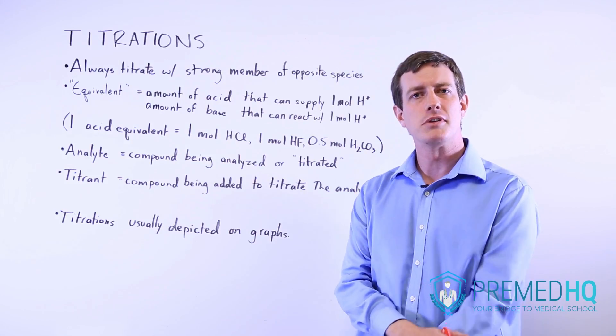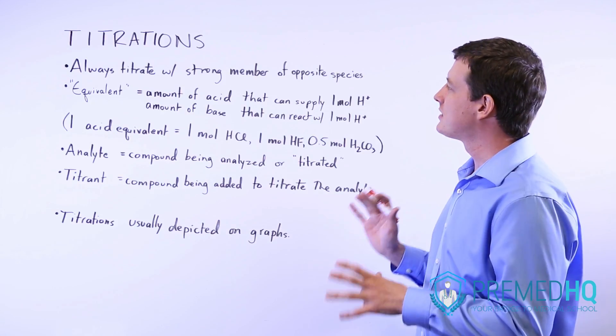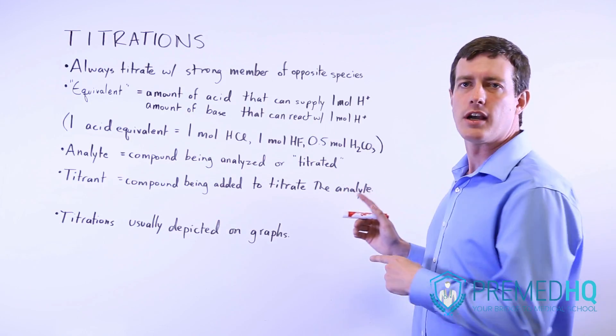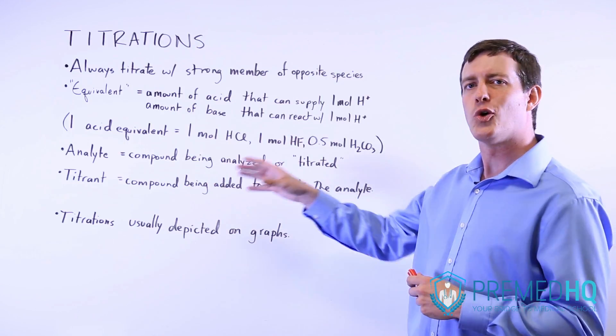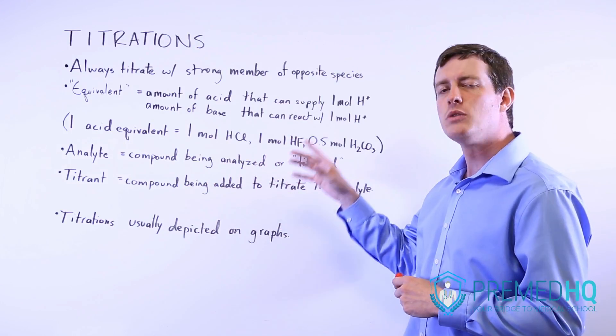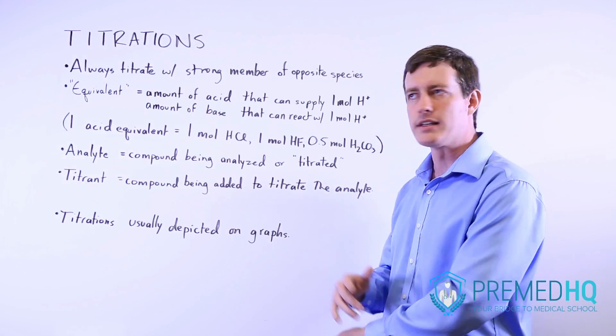First, we'll go through some of the basic principles of titration. The first thing is that you always titrate with a strong member of the opposite species. So whether you're titrating a weak acid or a strong acid, you will be adding to it a strong base like NaOH or something like that.